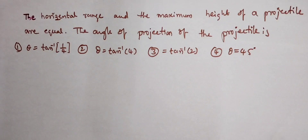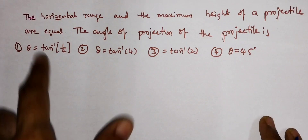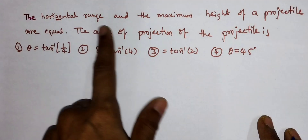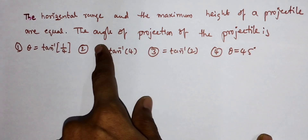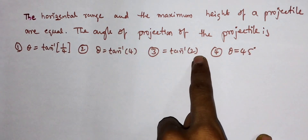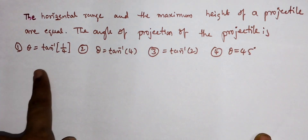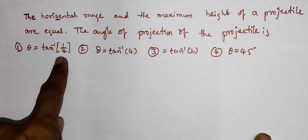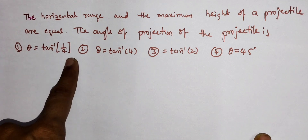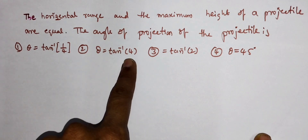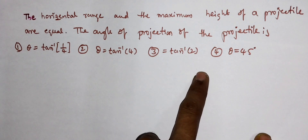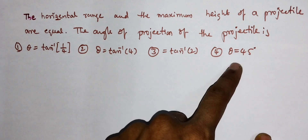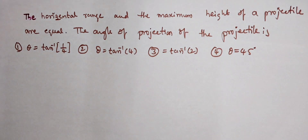Hello everyone, here is a projectile problem. The problem is: the horizontal range and maximum height of the projectile are equal. Then the angle of projection of the projectile — they are asking. The options are: tan inverse of 1 by 4, tan inverse of 4, tan inverse of 2, and theta is equal to 45.